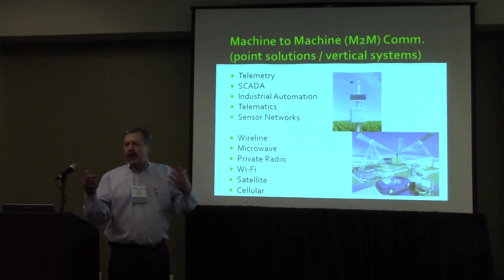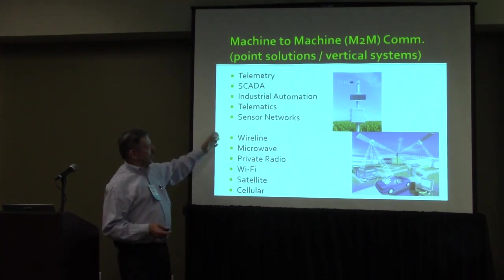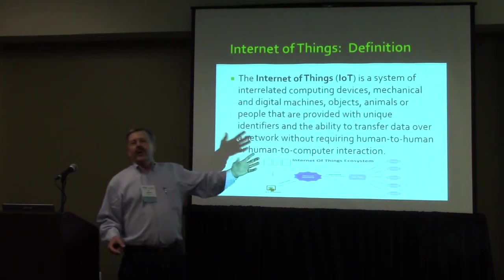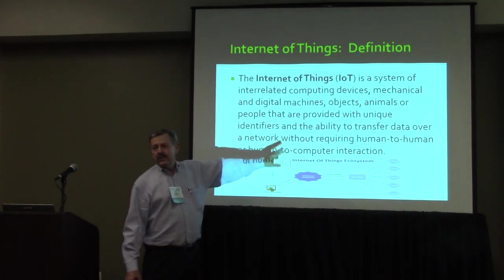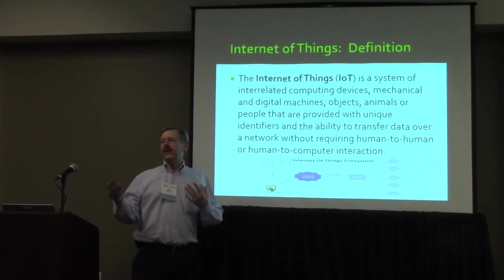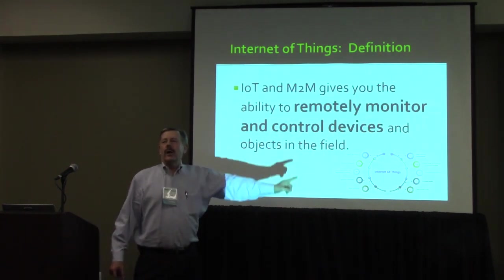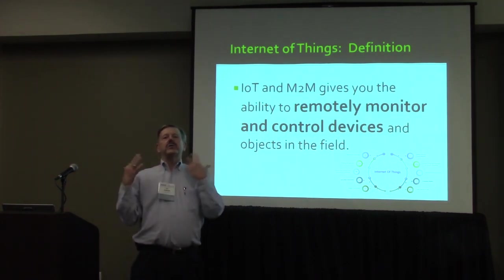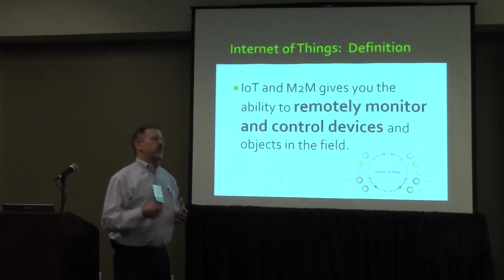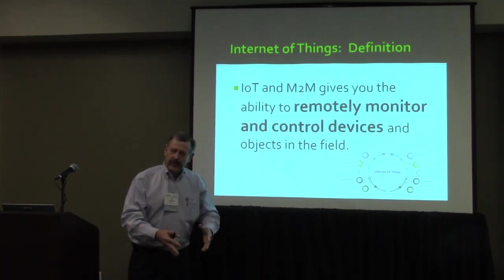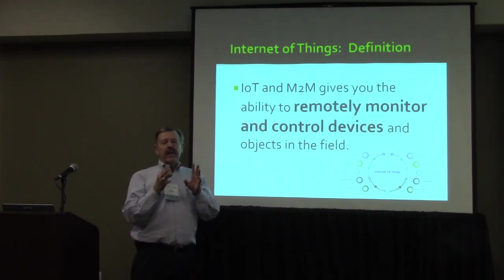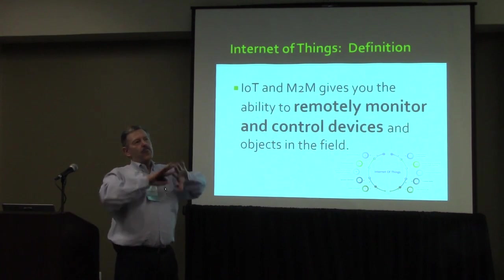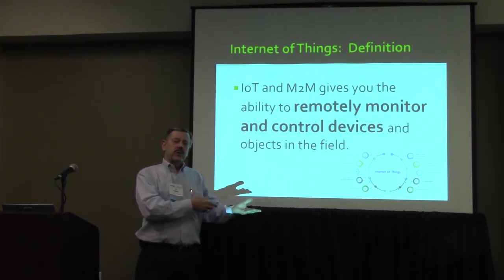The technologies that allowed those devices to connect to back-end control systems were wireline, microwave, private radio, Wi-Fi, satellite, and cellular. My definition of IoT is it's about remotely monitoring and possibly controlling devices in the field. We're collecting information, massaging it, analyzing it, and then deciding to do something. Internet of Things is more broad than M2M — you're collecting information from many different verticals and domains to see a bigger picture of the world.